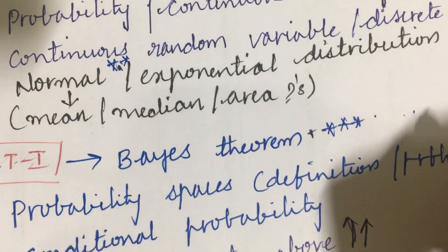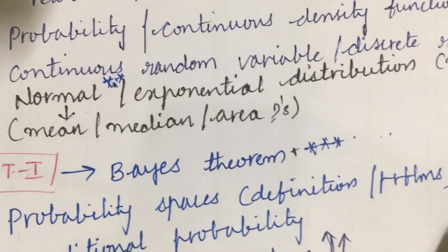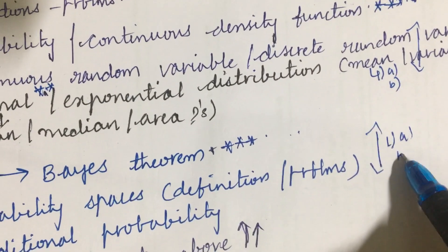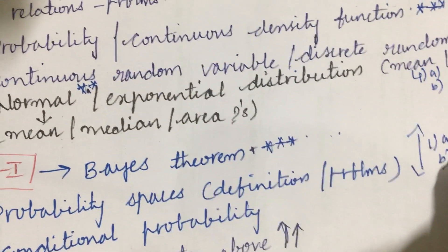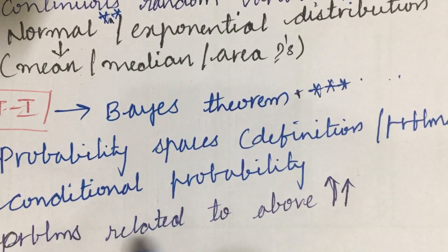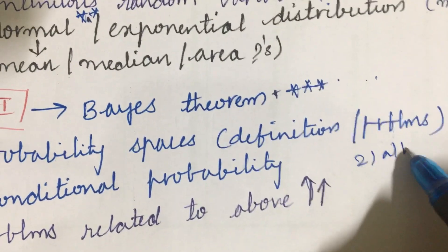This may be the first question, and the probability spaces and its definition and the problems related to this. From these two concepts we can expect 1A as well as 1B. Do not expect direct 15 mark questions. And the conditional probability and the problems related to all the concepts may be the 2A as well as 2B.